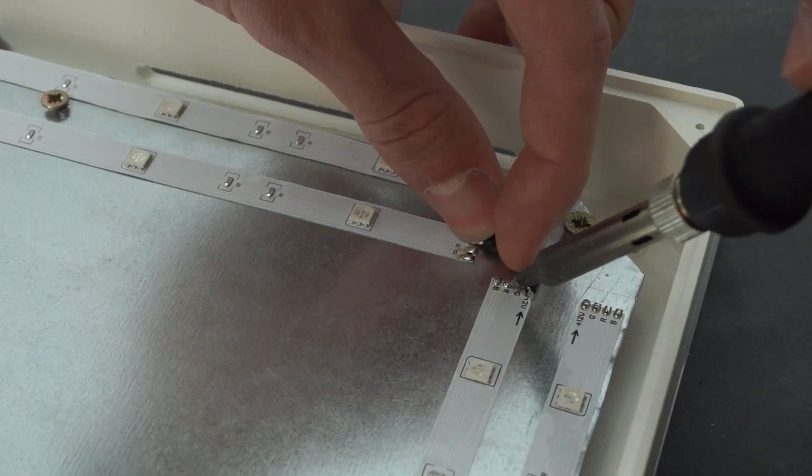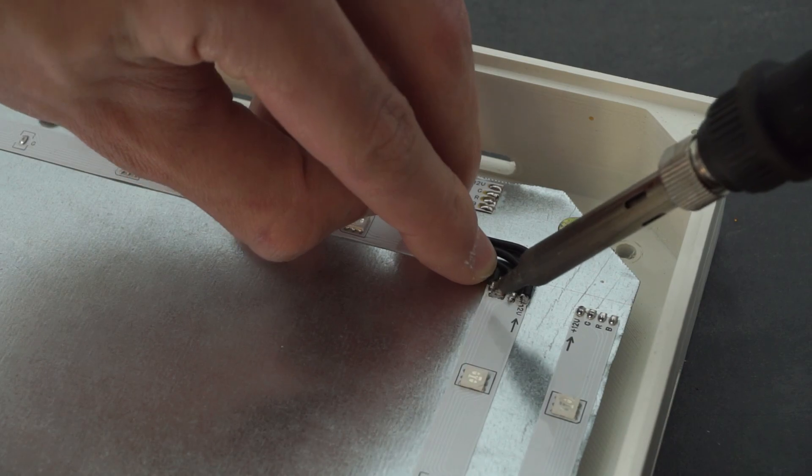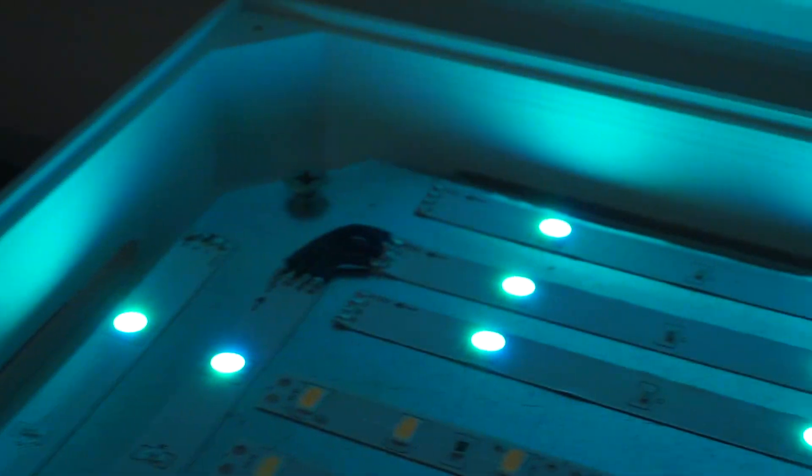However, soldering wires was different for RGB strips as I needed to make four connections for red, green, blue, and ground instead of just positive and negative for white lights.